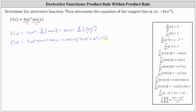Now we need to simplify. We have f prime of x equals four x e to the x secant x tangent x, plus distributing, we have four x e to the x secant x, and then plus four e to the x secant x.